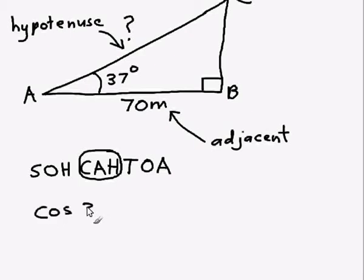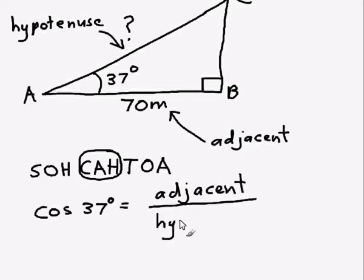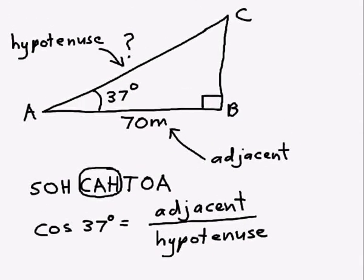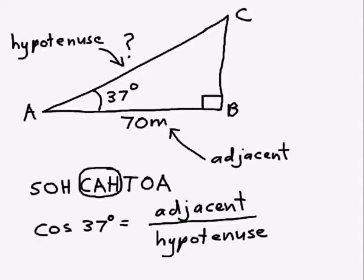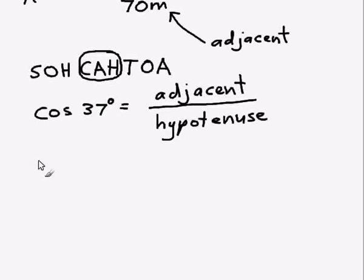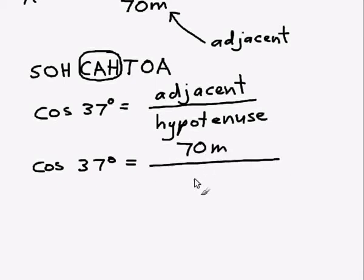So we can write an expression using cos. Cos of 37 degrees, or cos of any angle in fact, is the adjacent side divided by the hypotenuse. Now, our adjacent side is 70 meters. The hypotenuse is our length AC that we're trying to find out. So instead of writing adjacent and hypotenuse, we can put these values in. So equals the adjacent, which is 70 meters. And the hypotenuse is the length AC, which we're trying to find out.